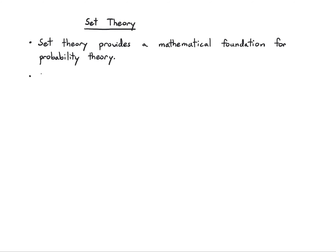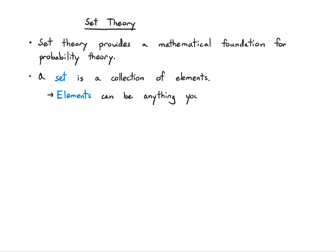A set is a collection of elements. And let's also define elements — elements really can be anything that we want. So as an example, maybe I want to think about numbers. How about a finite list of numbers? So maybe I have 1, 3, 5.